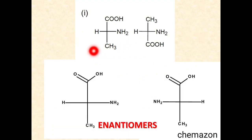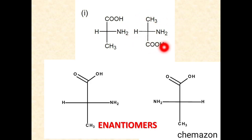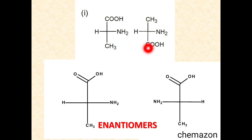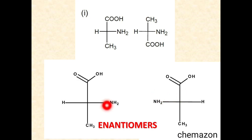In the first set, this is one molecule and when we rotate the second molecule 180 degrees in plane it looks like this: H comes to the right, NH₂ to the left, the carboxylic acid group on top, and the methyl group at the bottom. You can see the chiral center configuration is reversed in the second molecule compared to the first, so these are a pair of enantiomers.